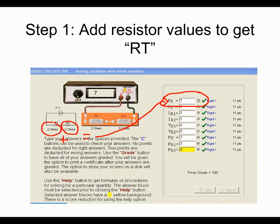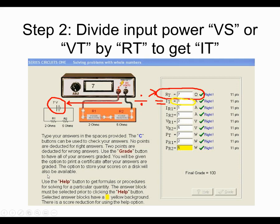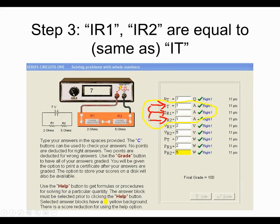Okay, so here's the start of the worked example. There's your resistance total — we've got a 2-ohm and a 5-ohm. You add them up and you get 7. Next, you've got 7 volts powering it, so that's your voltage total. You take resistance total and divide the voltage total by it: 7 divided by 7 gives you 1. And because it's a series circuit, the IR1 and IR2 values are the same as the IT value.